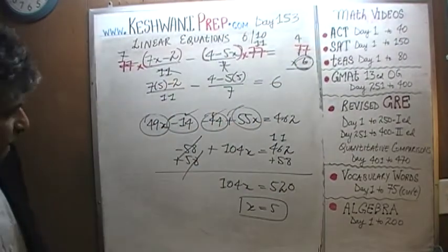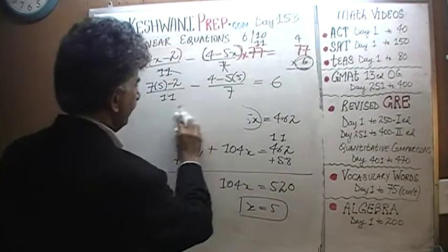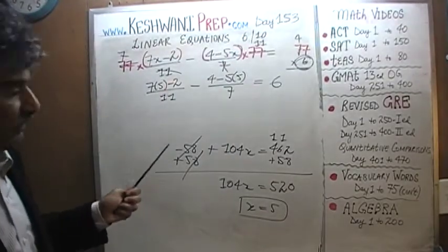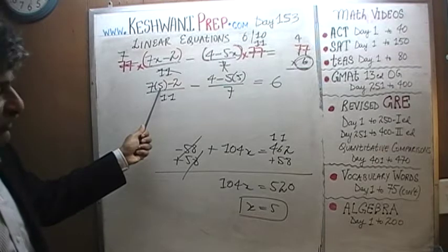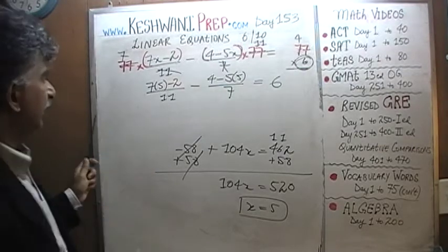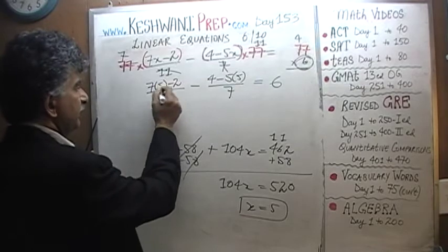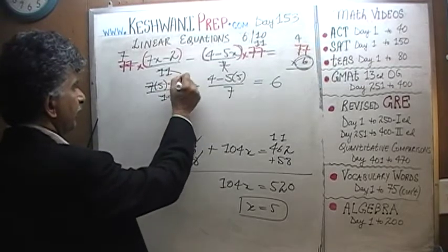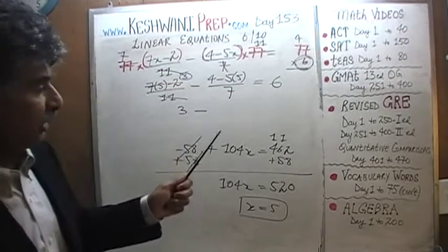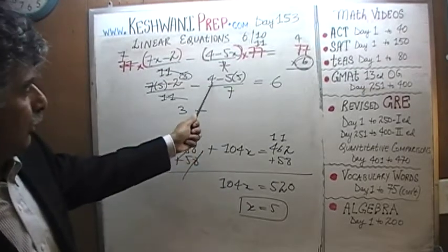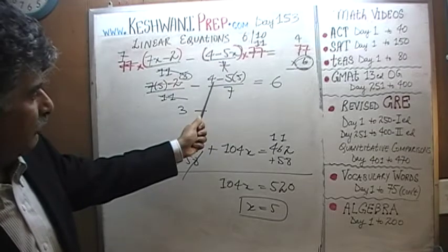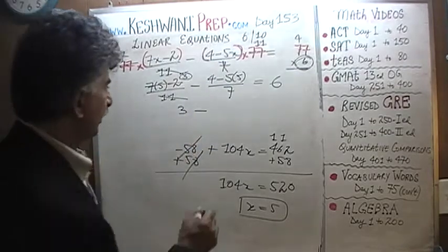Let's see what it comes out to. Stay with me. 7 times 5 is 35, 35 minus 2 is 33, 33 divided by 11 is 3. So this whole quantity comes out to 3. Minus — this is where it's going to get prickly, so pay attention. Negative 5 times 5 is negative 25. Negative 25 plus 4 is going to be negative 21.